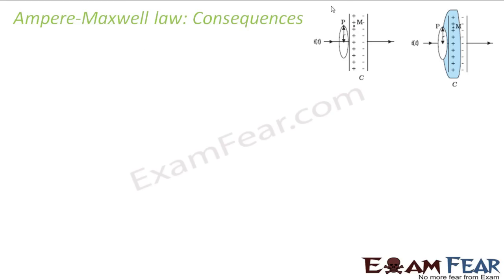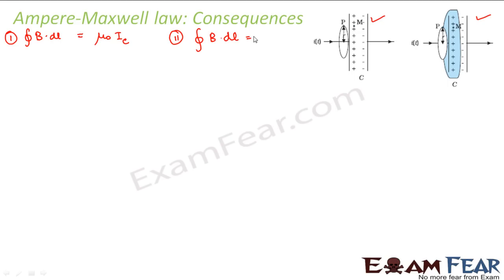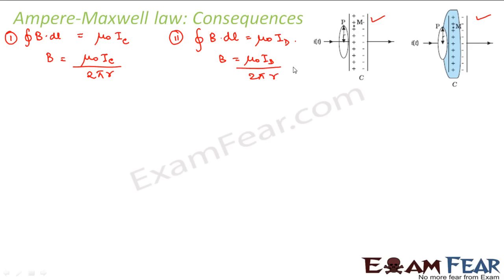Looking at the two setups: in the first setup, the magnetic field is given by the line integral of B·dL equals μ₀I, where I is the conduction current Ic. In the second setup, the line integral of B·dL equals μ₀(Ic + Id). Here Ic is zero but you have Id, so in both cases you get a magnetic field: B = μ₀Ic / 2πr in the first setup and B = μ₀Id / 2πr in the second — consistent values even with different Amperian loops.